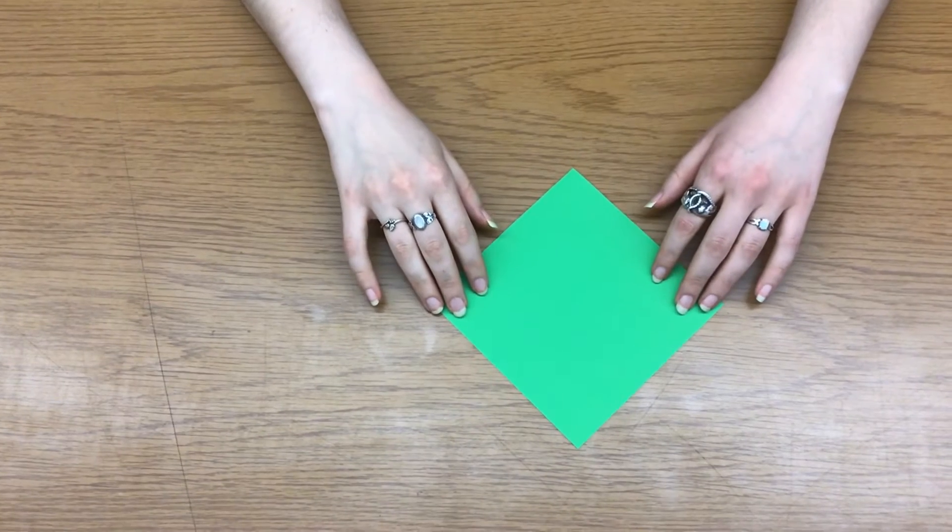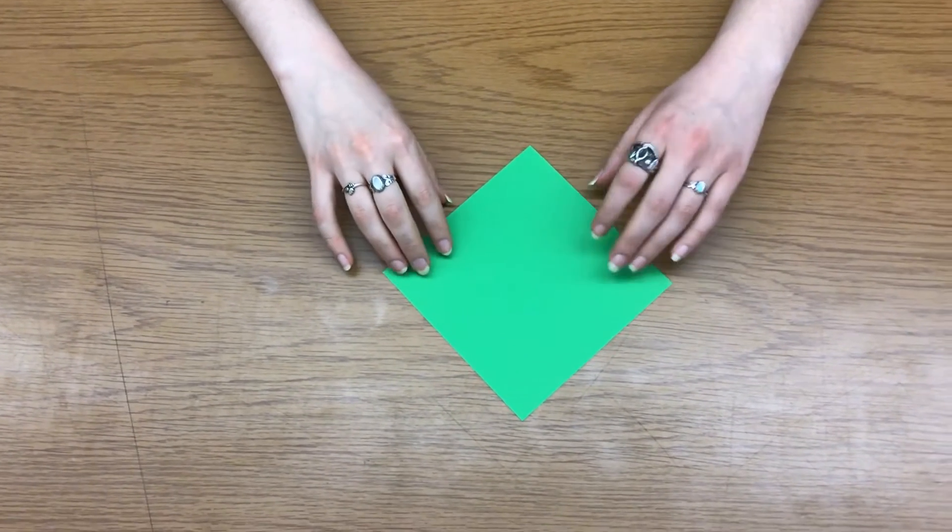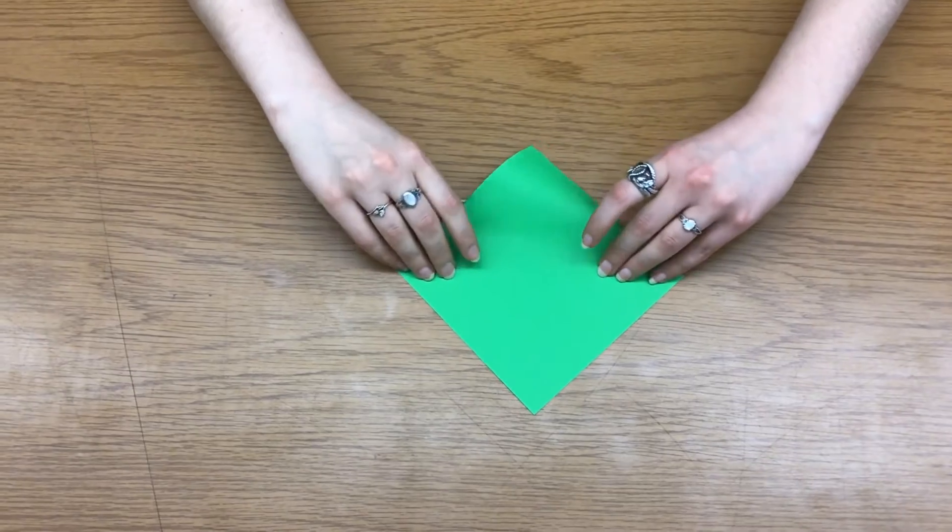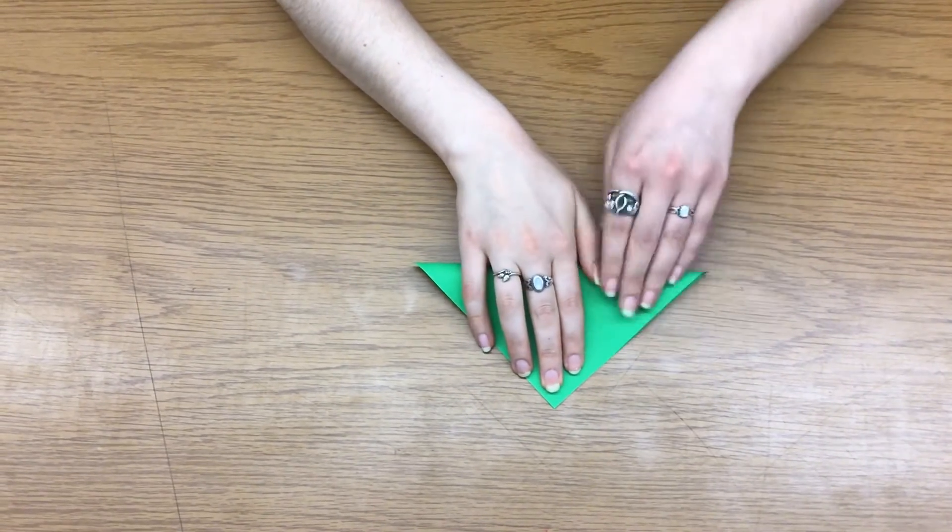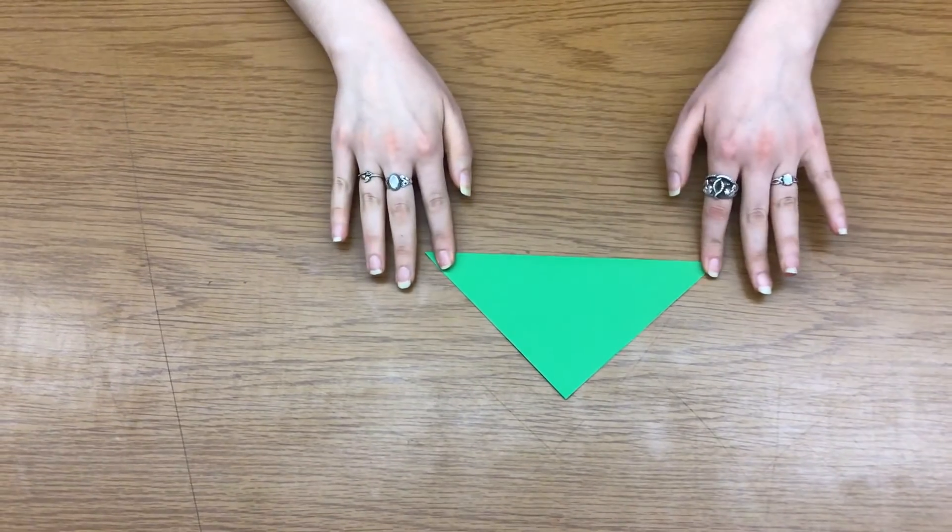All right, so we're going to start with our origami paper in a diamond shape. We're going to fold it up so that the corners are touching. We'll make a triangle.